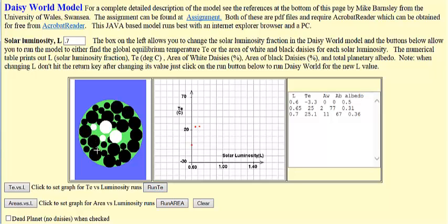And now the combination of black daisies and white daisies changes a little bit. So you have to be careful. Here's the planetary temperature, area of white daisies, area of black daisies, and the average albedo.